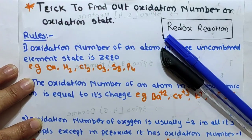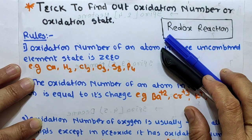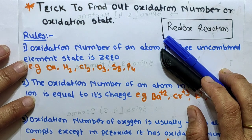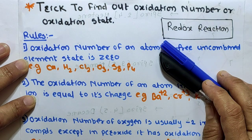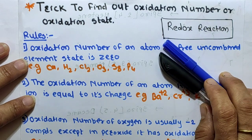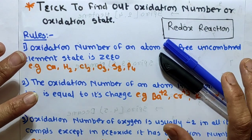Welcome to my channel. In this channel I will teach chemistry in the simplest way. Today's topic is a trick to find out oxidation number, oxidation state, and redox reactions. Now let's start the session.